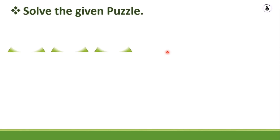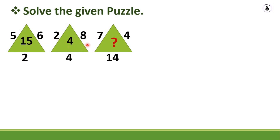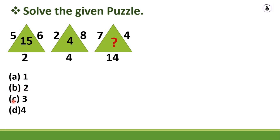The first problem is a triangular series puzzle. If you observe: 5, 6, 2 and the inner value is 15. A similar pattern gives 2, 8, 4, 4 and then 7, 4, 14 — and you need to find the question mark. The options are: A) 1, B) 2, C) 3, D) 4. I'll give 10 seconds to solve this.